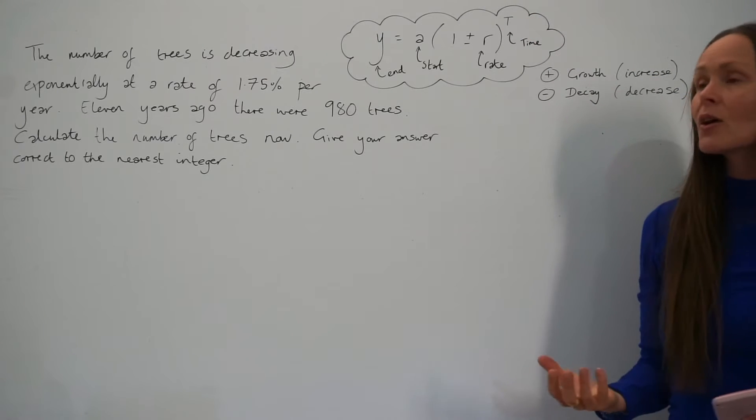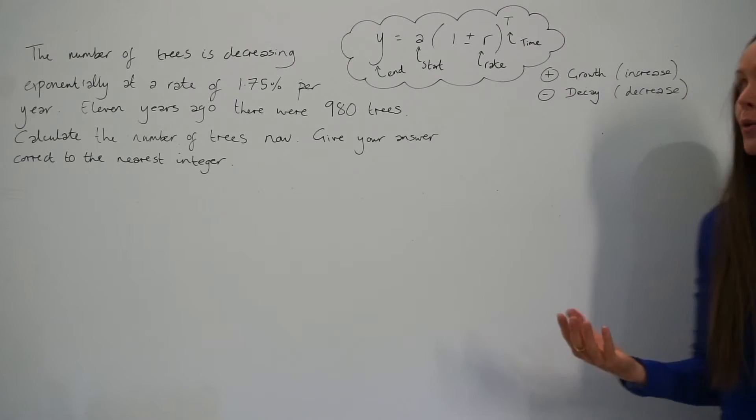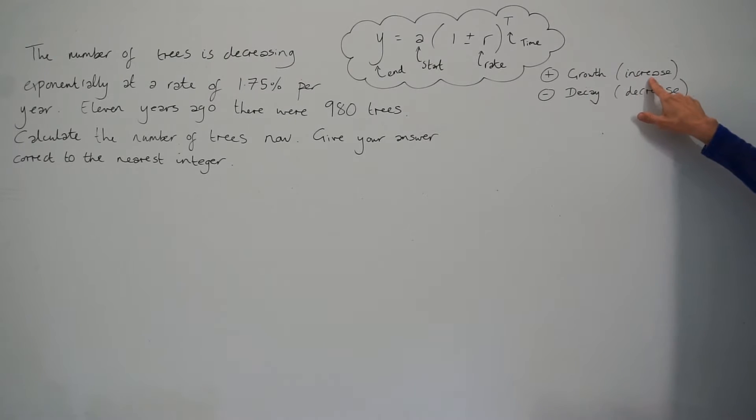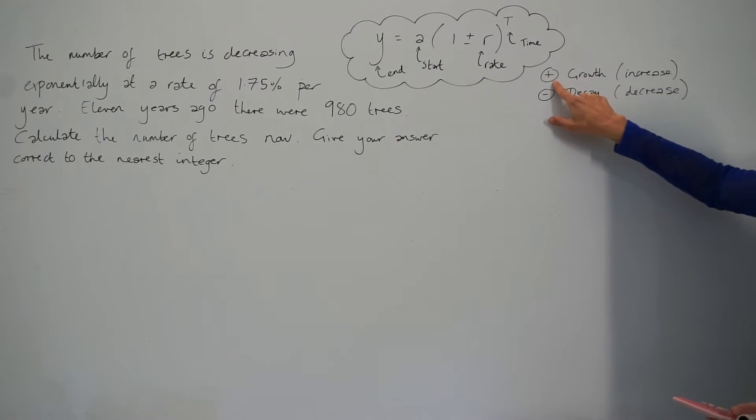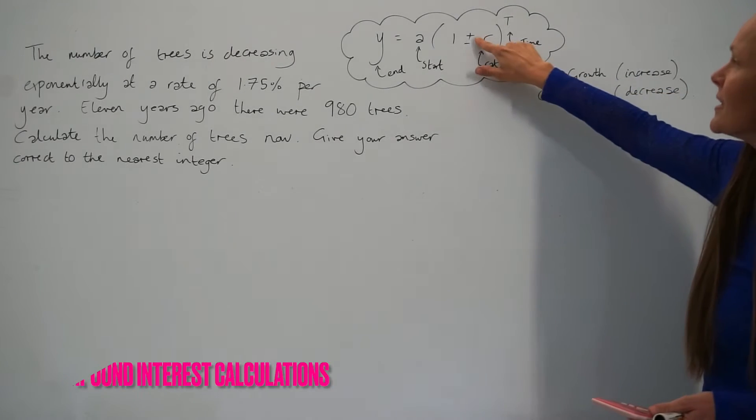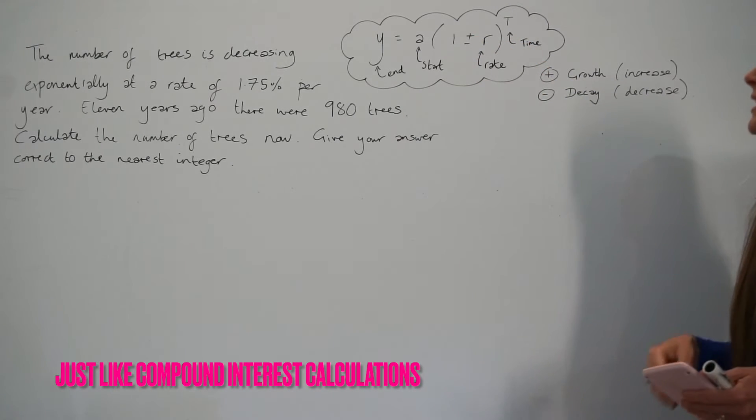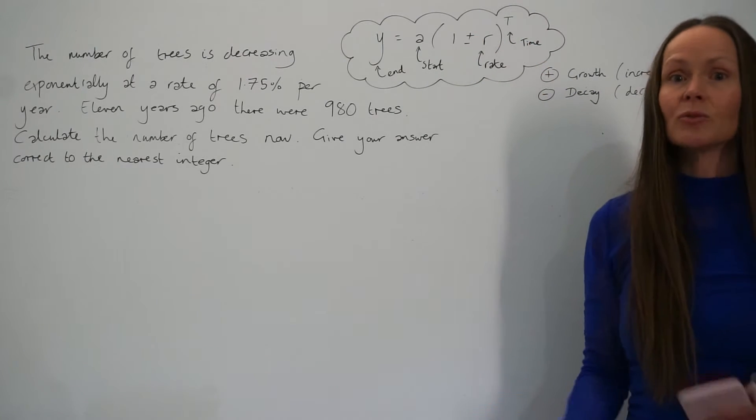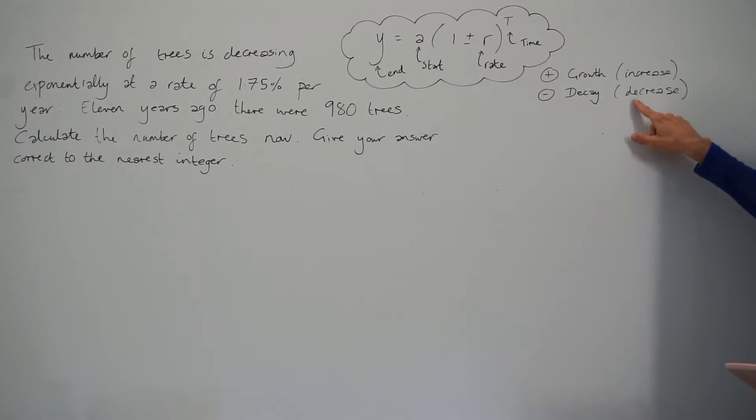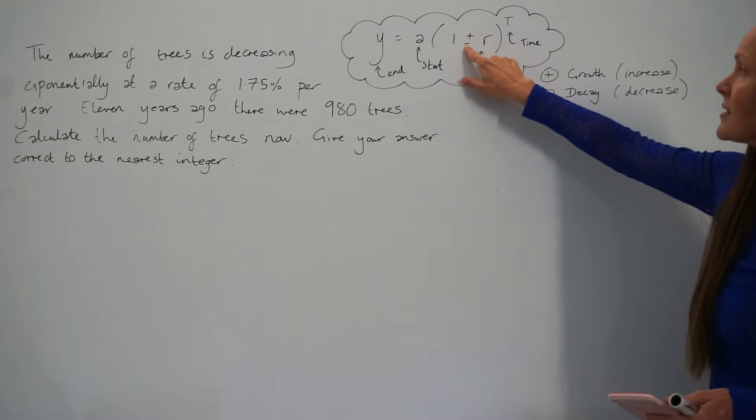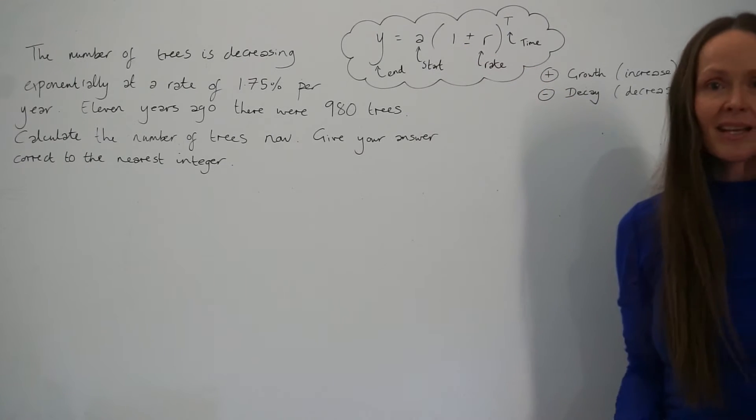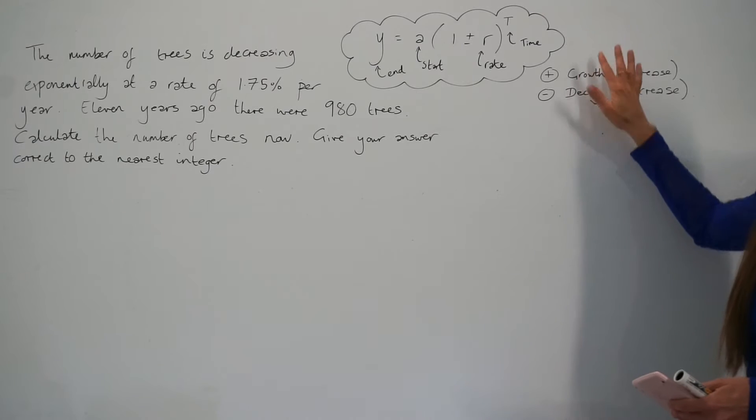So if it's a question involving exponential growth, sometimes it will say exponential increase in the question. You have to remember to use the plus symbol inside the brackets here, and if it's a question involving exponential decay, sometimes it will say exponential decrease, then you would have to take the minus symbol inside the brackets instead. So we'll refer to this as we go along.